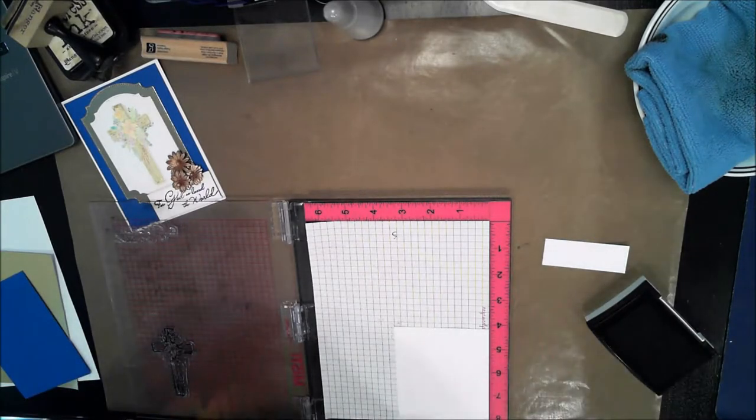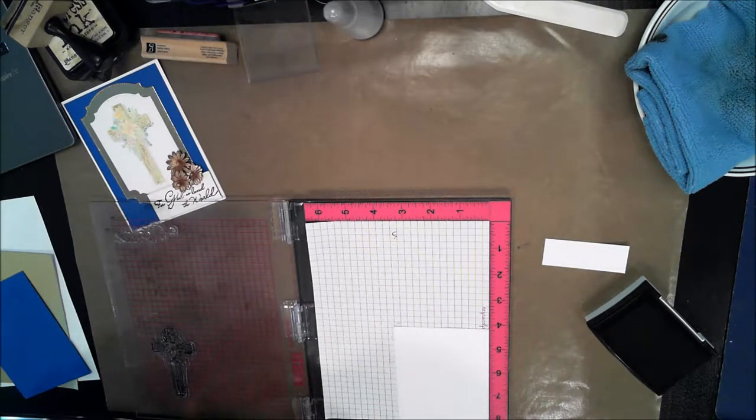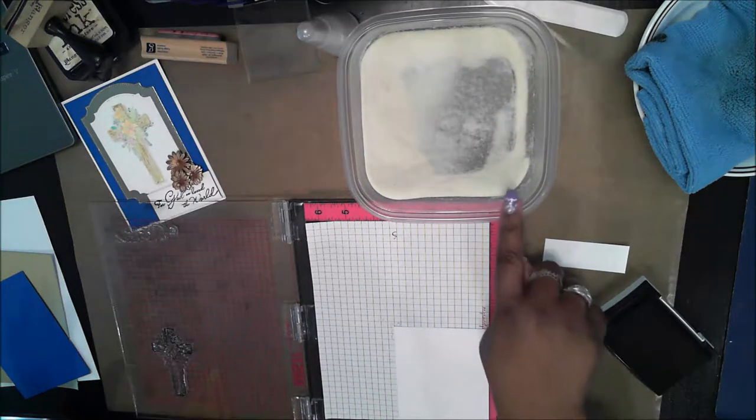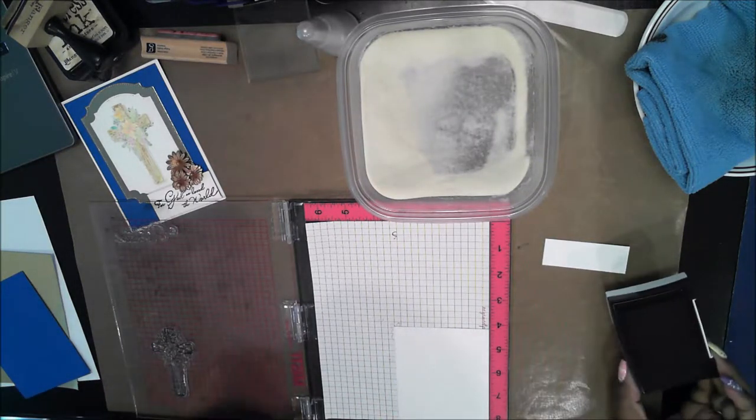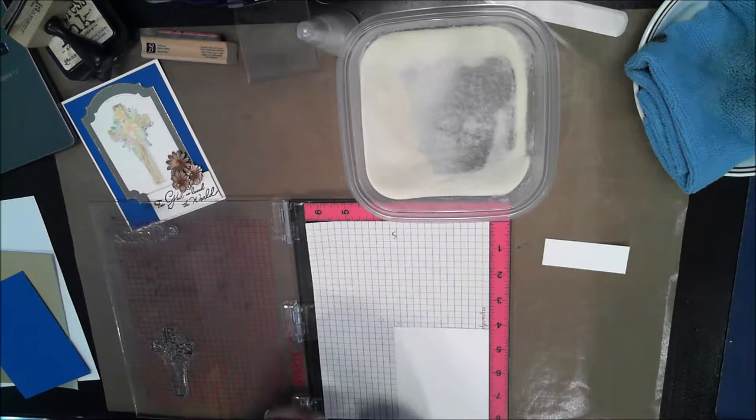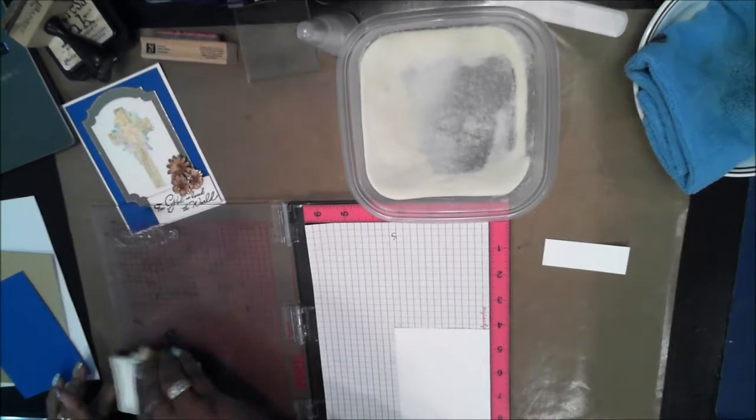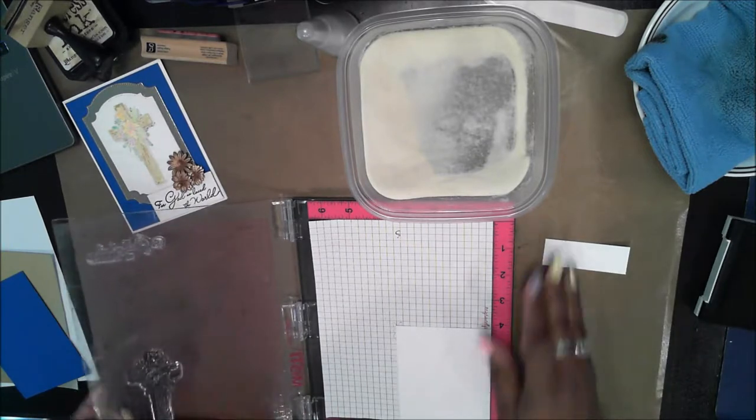Oh I forgot, because I'm going to be doing the clear embossing over the VersaFine I need to have the embossing powder ready to go because I have to take advantage of the fact that this ink stays wet a little bit longer and that'll allow me to put the embossing powder on it.